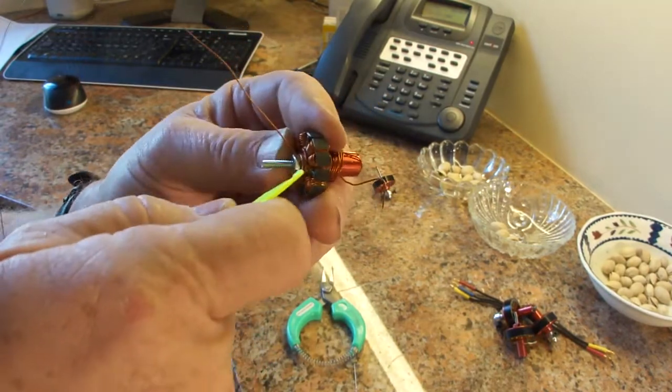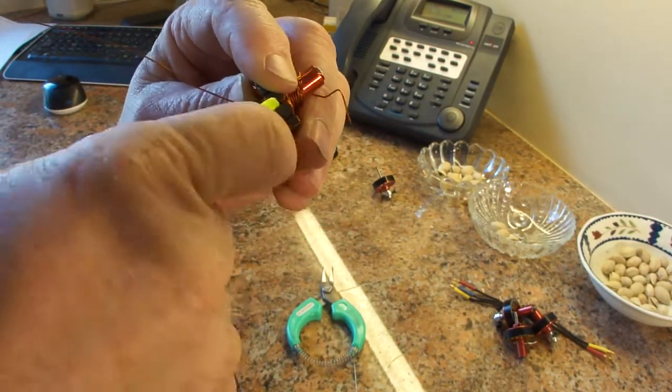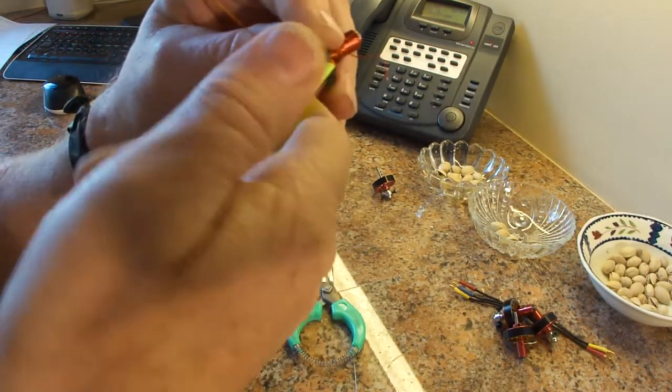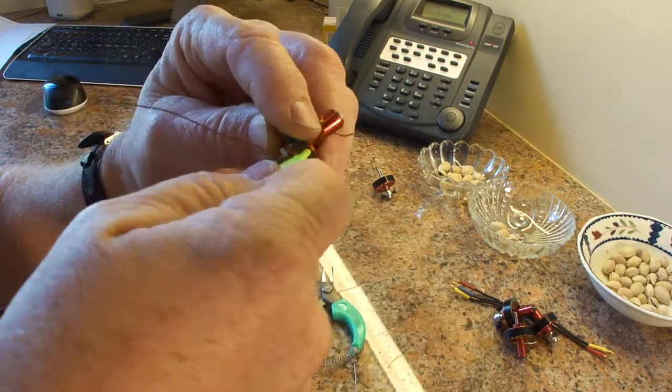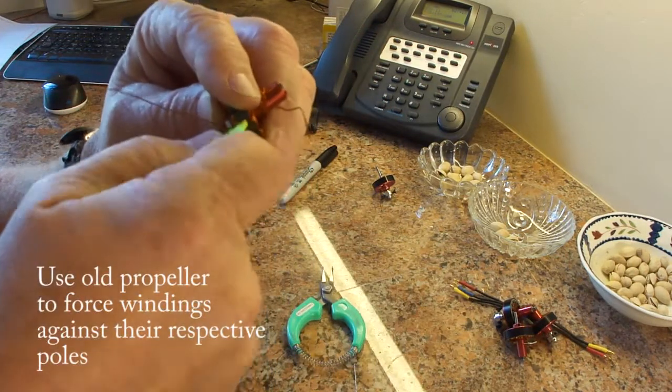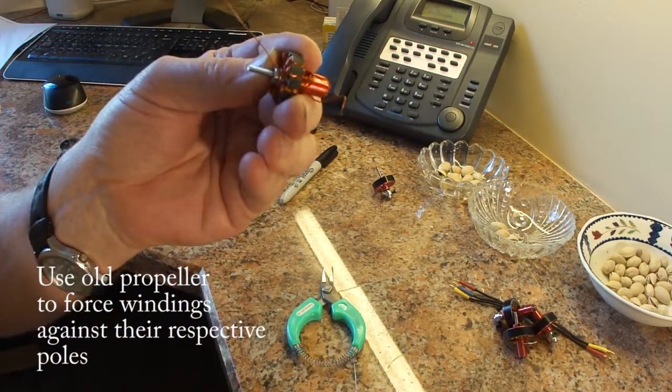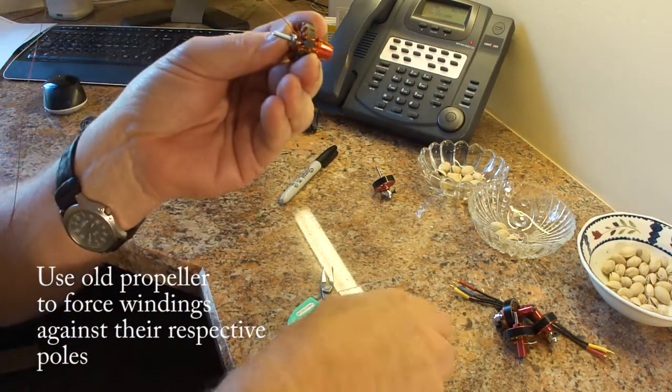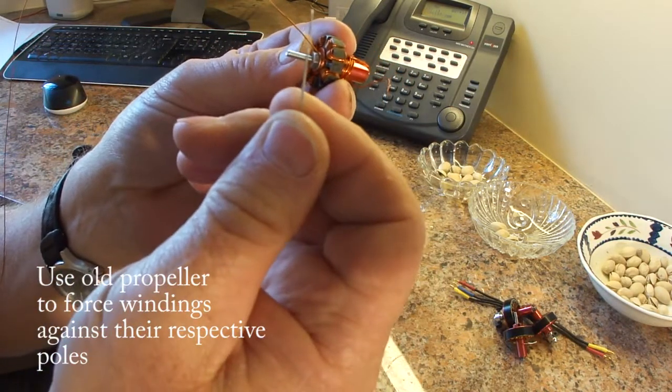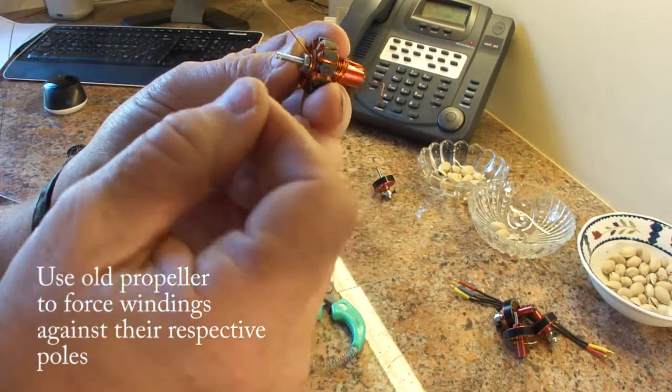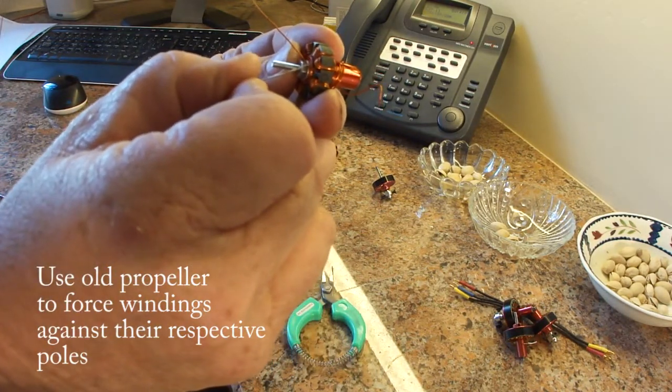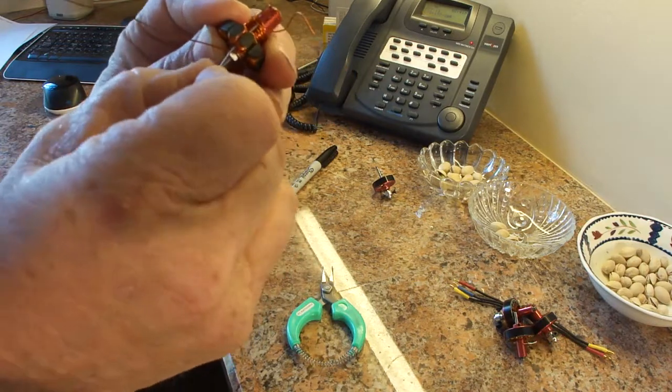As you get toward the inboard windings, there may not be enough room to get that wire through. So use your old propeller and see if you can make room for it. And if that doesn't do it, you might be able to take your needle that you hone your EPP foam down with and maybe find a little hole in there with that.